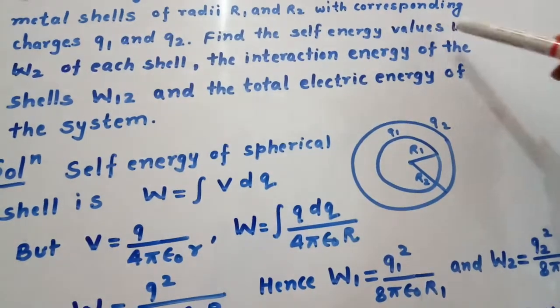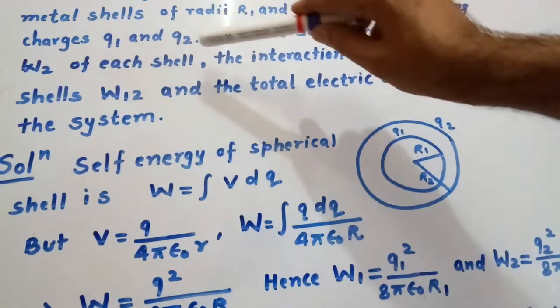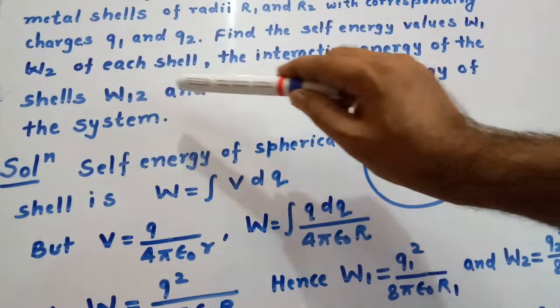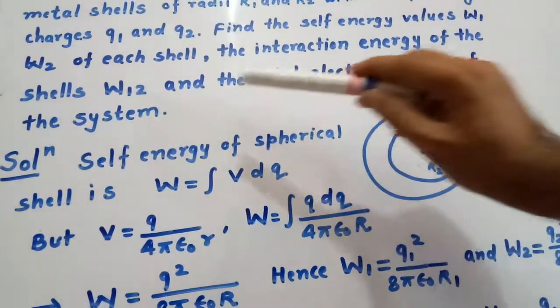Find the self energy values w1 and w2 of each shell, the interaction energy of the shells w12, and the total energy of the system.